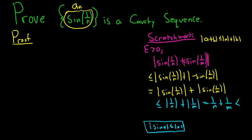The goal is to make this less than epsilon. One thought is to make each term equal to epsilon over 2, and then add them so the result equals epsilon. But if we can make 1 over n less than epsilon over 2 and 1 over m less than epsilon over 2, then the sum will be less than epsilon. So let's force that — this will create the strict less-than we need in the proof.